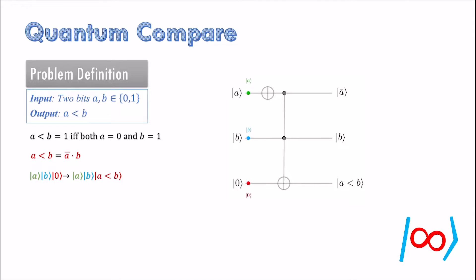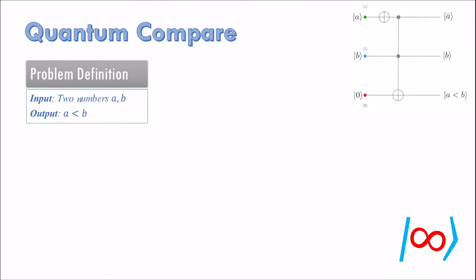Now we move on to compare numbers that require more than 1 bit to represent. Suppose the binary expansions of a and b are written as follows, where each a_i and b_i are 0 or 1 bits.